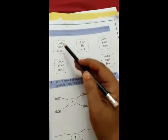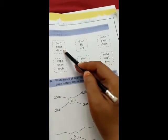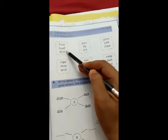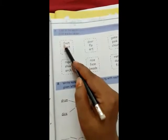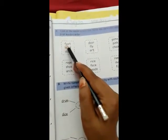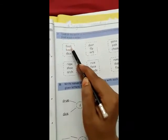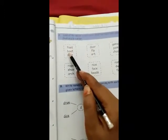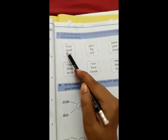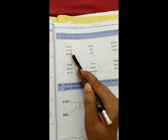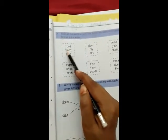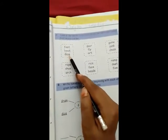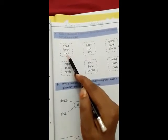First, we have three words in a box. First word is foot, F-O-O-T. Second word is boat, B-O-A-T. The third is dice, D-I-C-E.